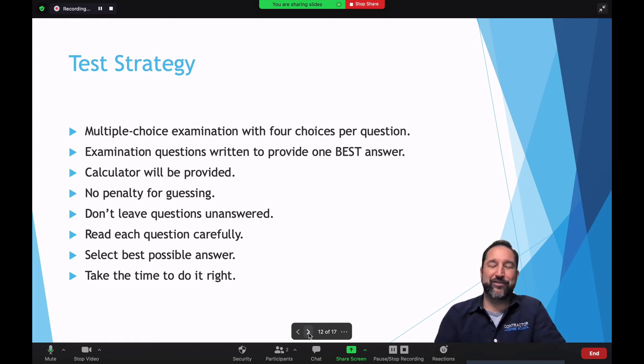Keep in mind that there is no penalty for guessing. So make sure if you don't know the answer, take your best educated guess. Statistics seem to show that answers tend to be usually B or C on average. So kind of keep that in mind. Don't leave questions unanswered. By the way, read each question carefully. Sometimes people rush through, they get the wording improperly and they misunderstand what's being asked of them. So read those questions, know those thoroughly. Select the best possible answer. And most importantly, take the time to do it right.